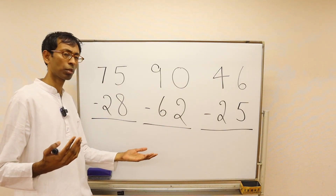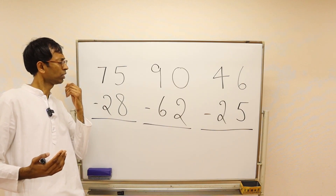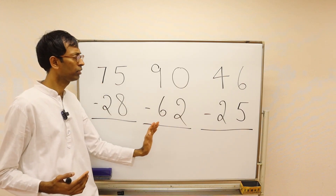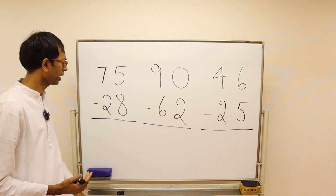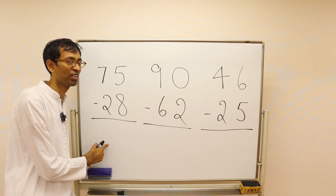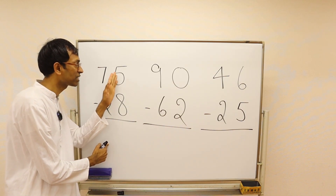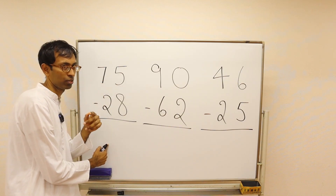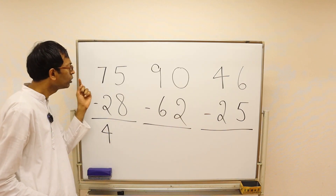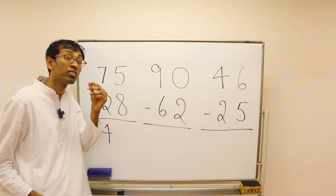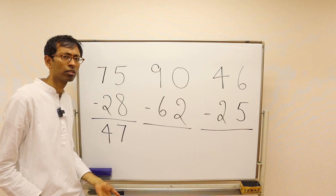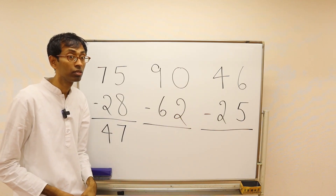Now we will solve subtraction problems just by looking at them, without using pen and paper. In this problem we start from the left: 7 minus 2 is 5. Do we put down a 5? No — because the next digits need help. So we give 1 away, and instead of 5 we put down a 4. Because we gave 1 away, 5 becomes 15, and 15 minus 8 is 7. Now you try these two problems by yourself — pause the video.